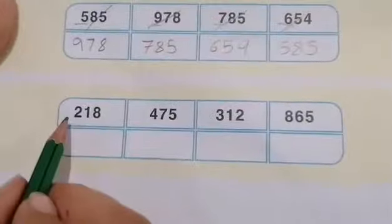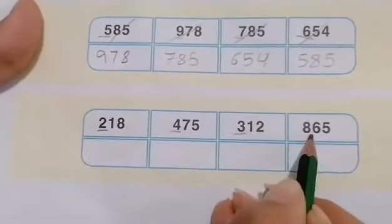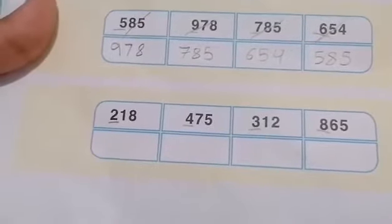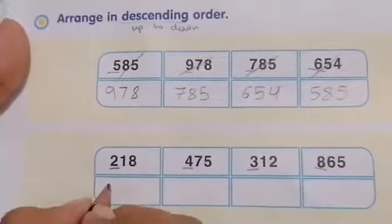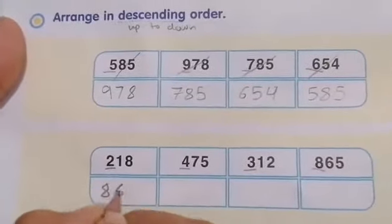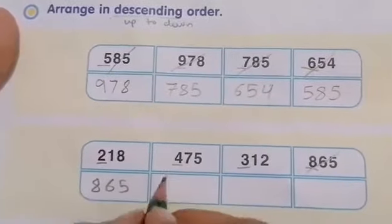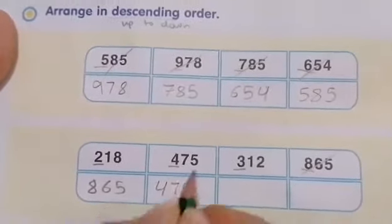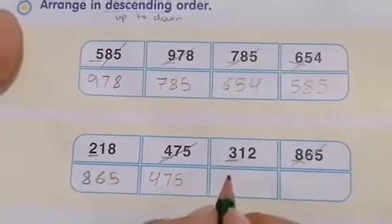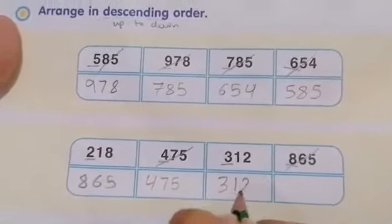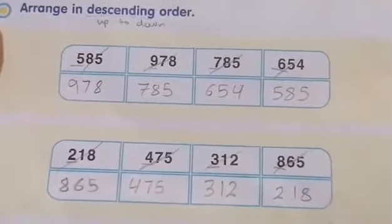Number 2: hundreds digits are 2, 4, 3, 8. Which number is the biggest — 2, 4, 3, or 8? Excellent — number 8. So 865 is first. Then 4. Excellent — 475 is next. Then 2 or 3? Excellent — 3. So 312 comes next, and the last one is 218.